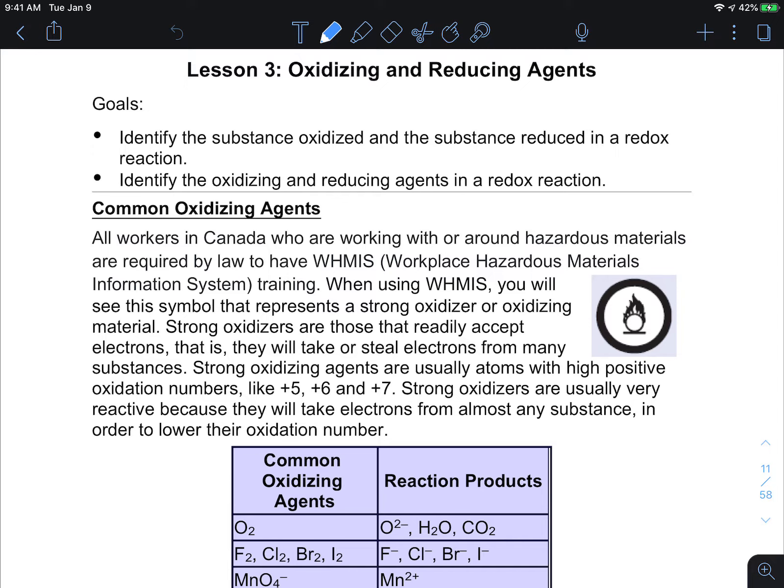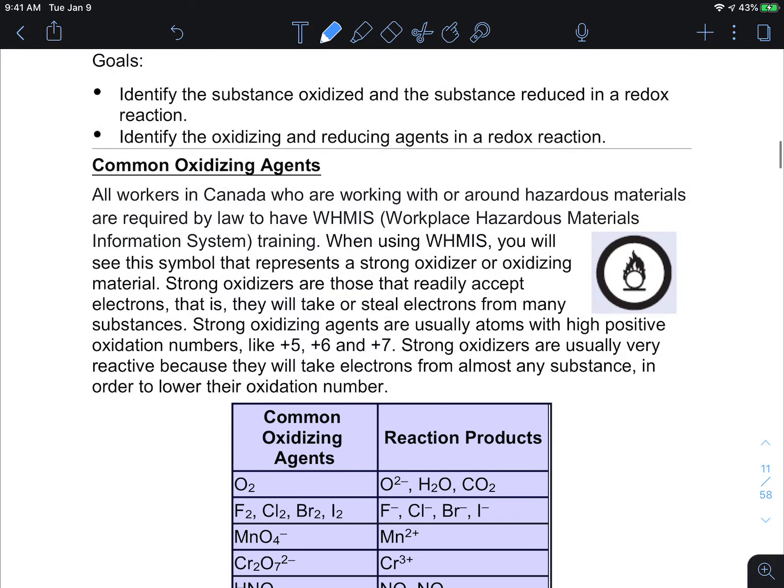Oxidizing agents are a common hazard in the workplace and the lab. They are often denoted with this symbol for an O because strong oxidizers will readily accept electrons and when they do this there's usually a large amount of heat that is released, and when this large amount of heat is released it can lead to a fire.